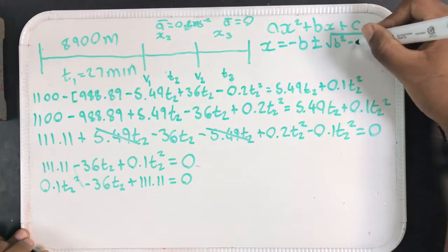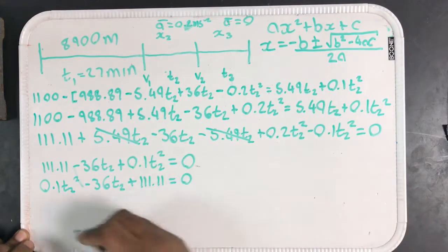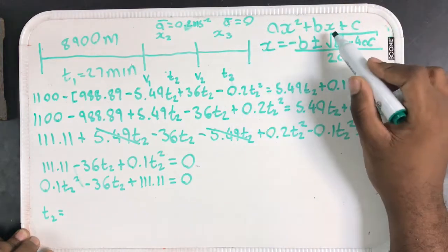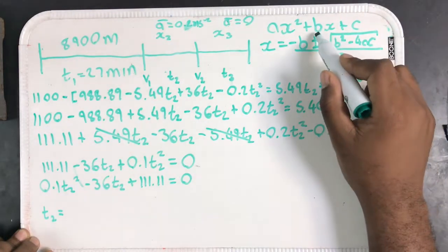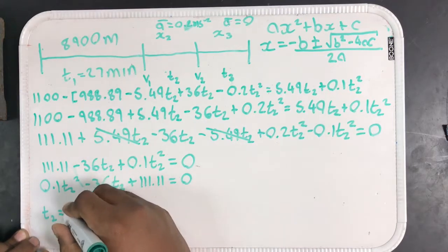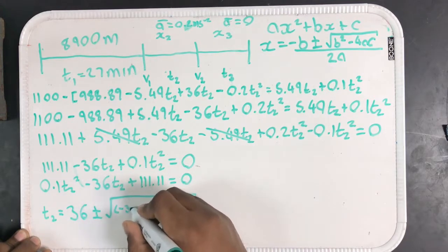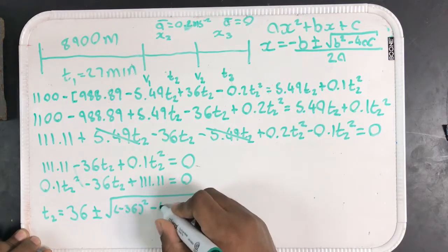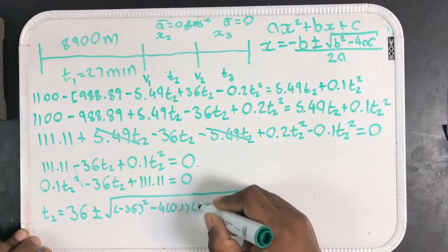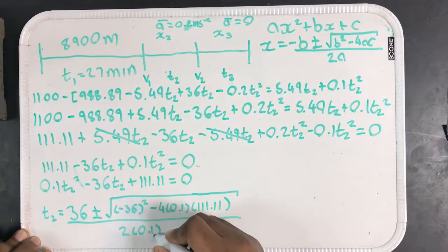I can use the quadratic formula. So I can solve for T2. Now I have an explicit equation giving me what T2 is. T2 equals negative B. B in this case is the term on our linear term. Our linear term here is just T2. So B is actually negative 36. So negative B would be positive 36 plus or minus, negative 36 all squared, brackets are very important, minus 4 times 0.1 times 111.11, divided by 2 times 0.1.